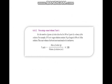Percentage mass by volume is the number of grams of solute dissolved in 100 cubic centimeters of solution. For example, a 10% mass by volume sugar solution contains 10 grams of sugar in 100 cubic centimeters of solution. The exact volume of solvent is not mentioned or not known.